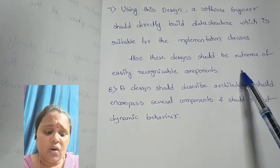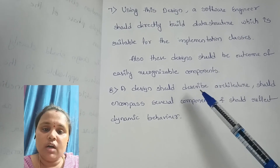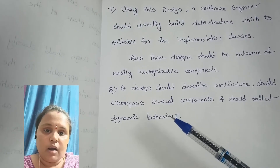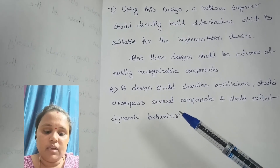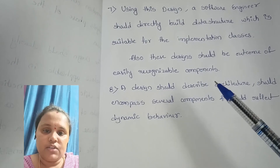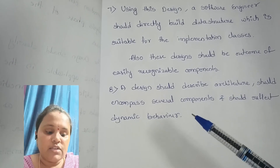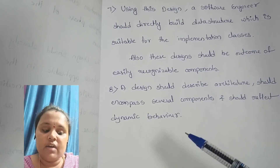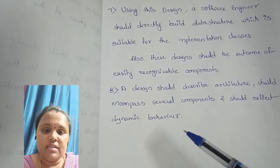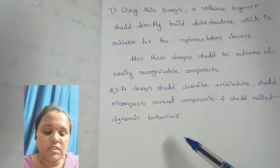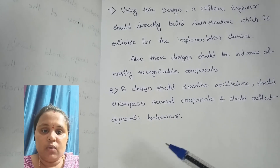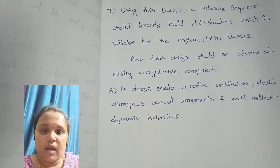All these designs should be the outcome of easily recognizable components. A design should describe the architecture and represent the several components reflected in it. We can also see the dynamic behavior of the system. These are the guidelines we are going to consider for design quality.